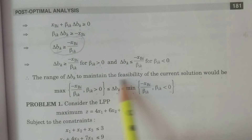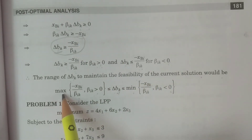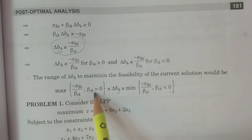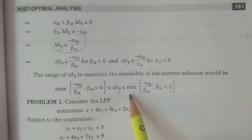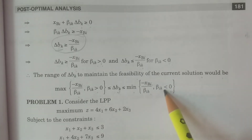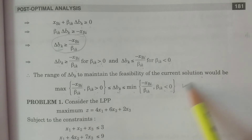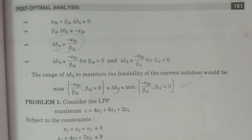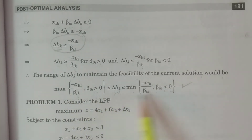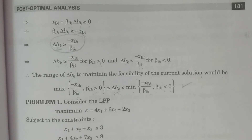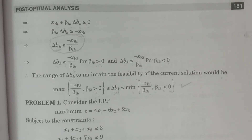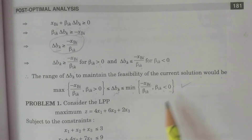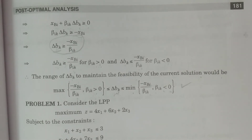Therefore, the range of δbk to maintain the feasibility of the current solution is obtained by: max(−xb_i / β_ik) for β_ik > 0 ≤ δbk ≤ min(−xb_i / β_ik) for β_ik < 0. If the range of δbk lies within this interval, the feasibility condition is maintained and we obtain the optimal solution of the new LPP. Hope you understand. Thank you.